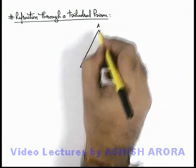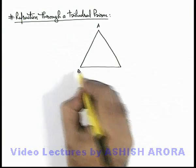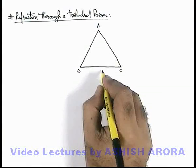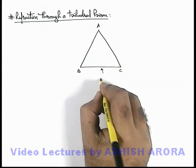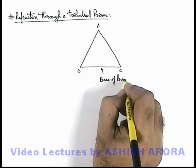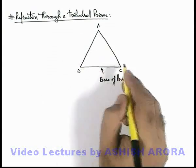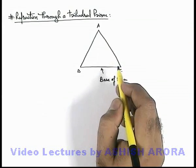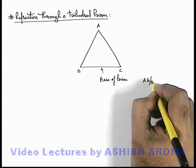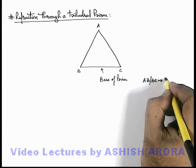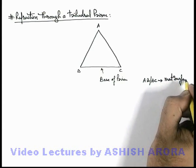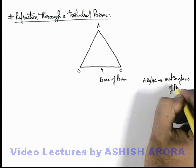Say if ABC is the cross section of a trihedral prism, in which the bottom face BC we term as the base of the prism, and the two surfaces through which the light ray is refracted — AB and AC — these are termed as the matt surfaces of the prism.